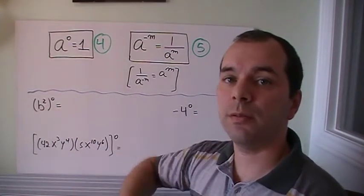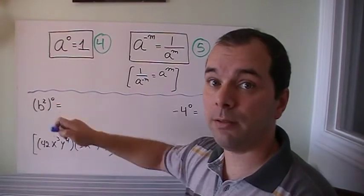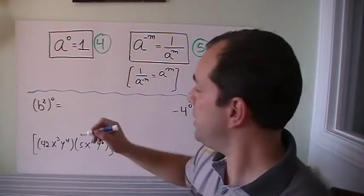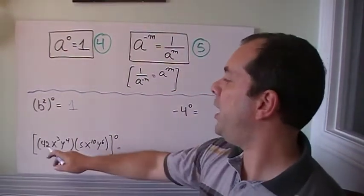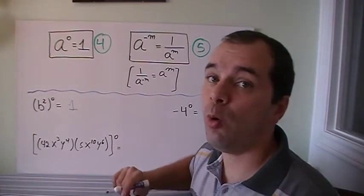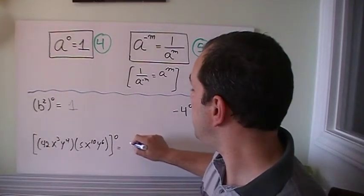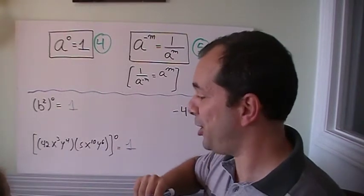B squared to the power of 0. Well, the power of a power, 2 times 0 is 0, and any number to the power of 0 is 1. And what if I had this big thing? The whole thing is to the power of 0. If the whole thing is to the power of 0, that means that this is going to end up being 1, which is kind of nice.